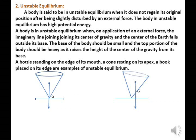The base of the body should be small and the top of the body should be heavy, as it raises the height of the center of gravity from its base. A bottle standing on the edge of its base, a cone resting on its apex, and a book placed on its edge are examples of unstable equilibrium.